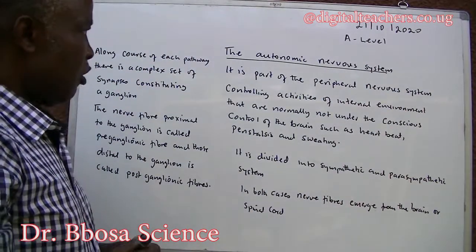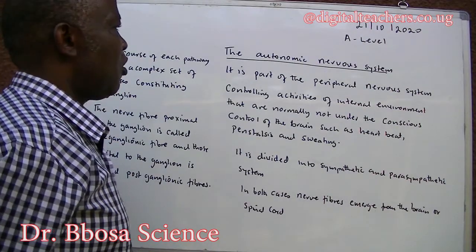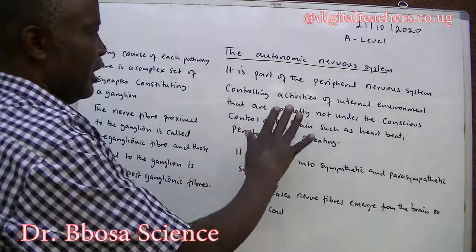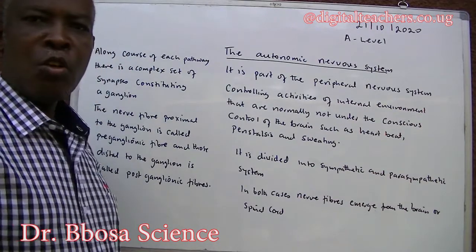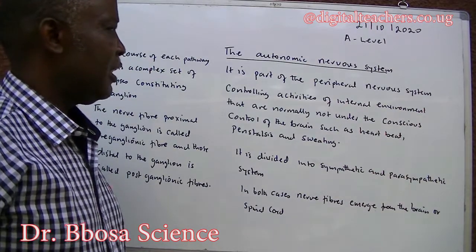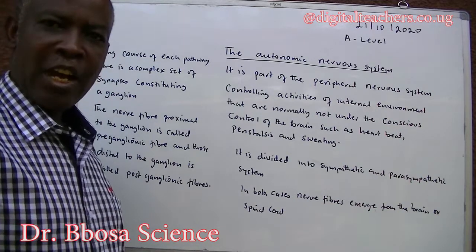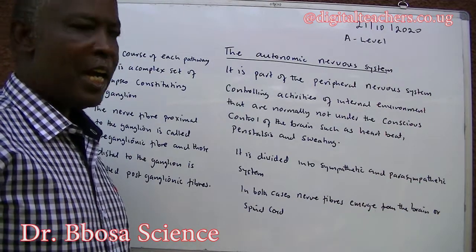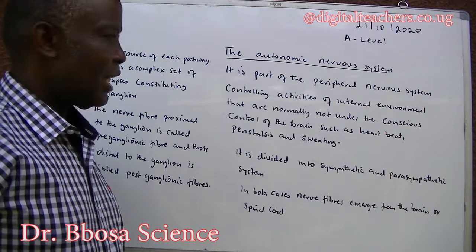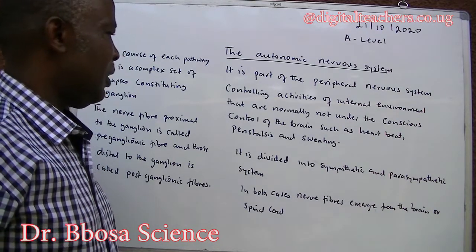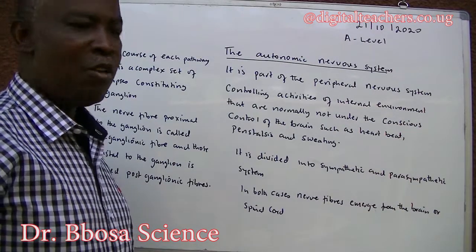The autonomic nervous system is a part of the peripheral nervous system, controlling activities of the internal environment that are normally not under the conscious control of the brain, such as heartbeat, peristalsis, sweating, and temperature control.